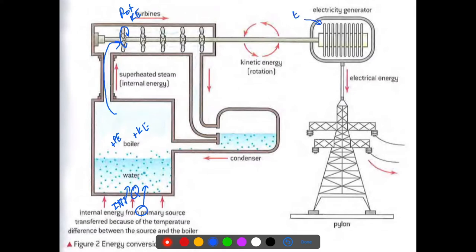Rotational kinetic energy then turns into electrical energy, which is then transferred to us. It's important to recognize — we've talked about conservation of energy — so we want to note what types of energy transfers are taking place and how we know the energy is being conserved. Of course, through all of this, energy will be lost to the system because no system is perfect.